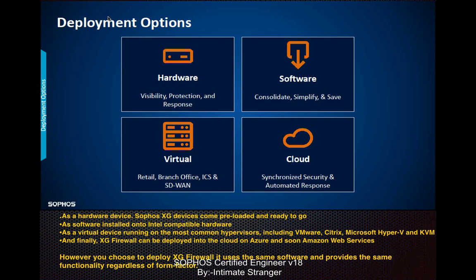The software version of the firewall is compatible with Intel-compatible hardware. As a virtual device it runs on common hypervisors including VMware, Citrix, Microsoft Hyper-V, and KVM. XG Firewall can also be deployed in the cloud on Azure and AWS. Regardless of form factor, it uses the same software and provides the same functionality. Higher models give more features and granular control; lower models have less control, but can be upgraded or subscribed to new options at any time.